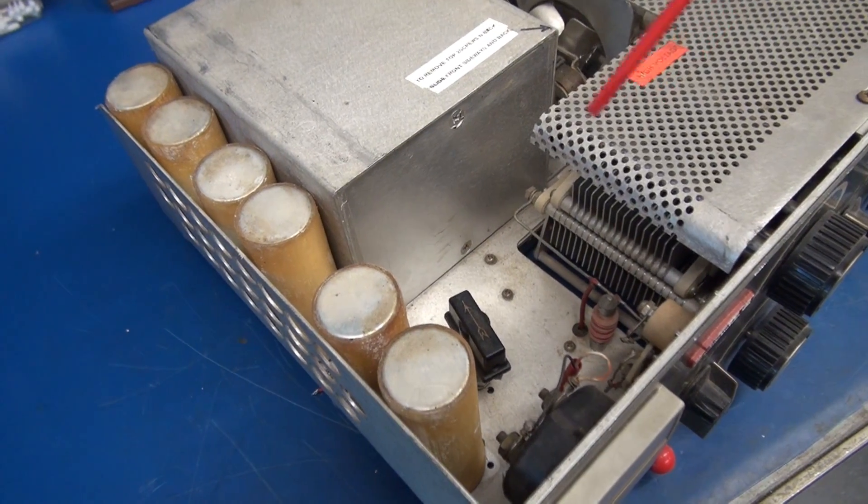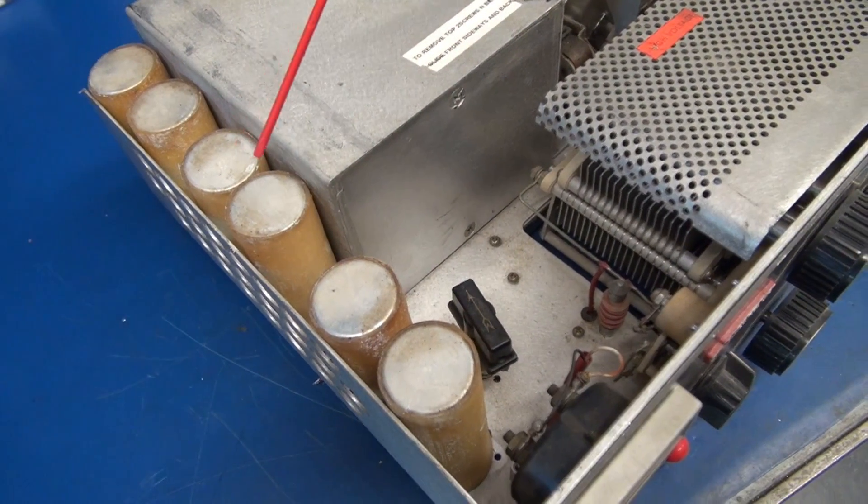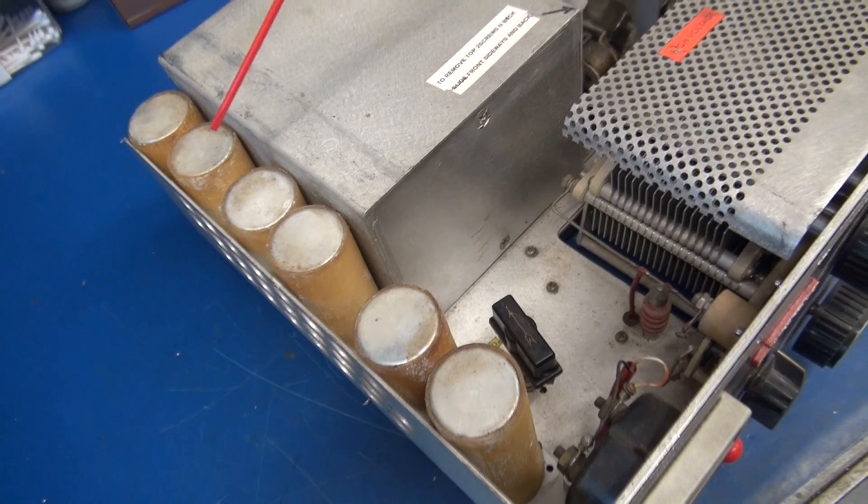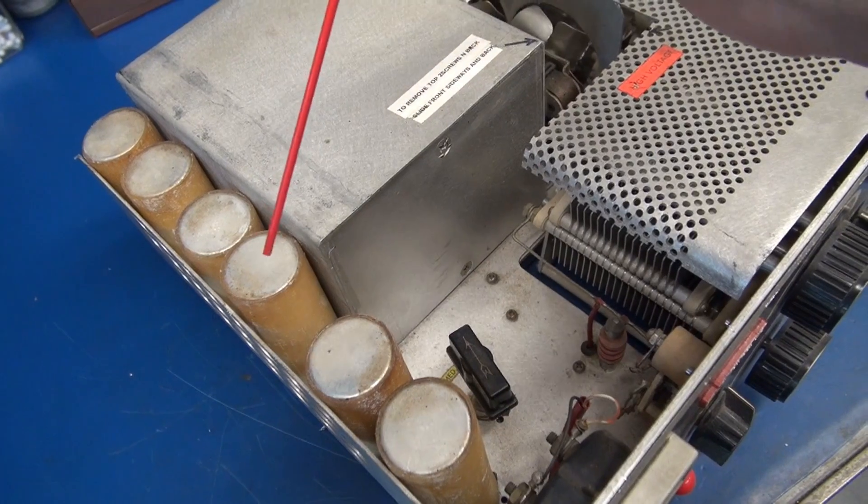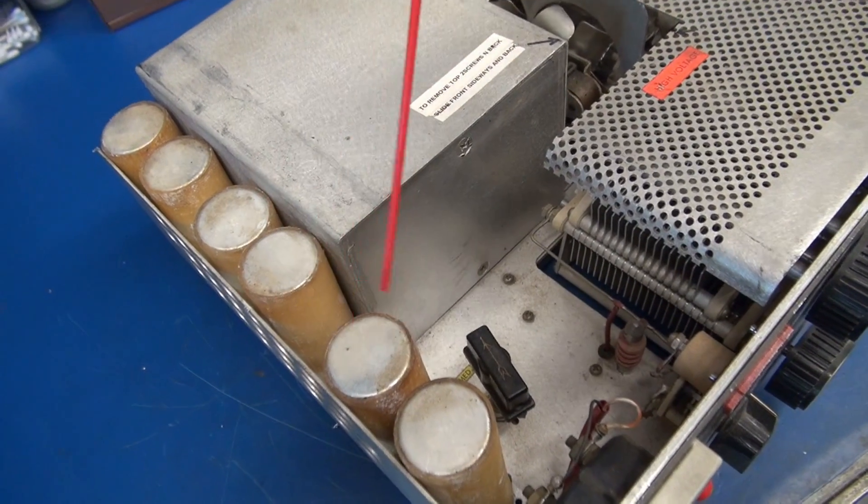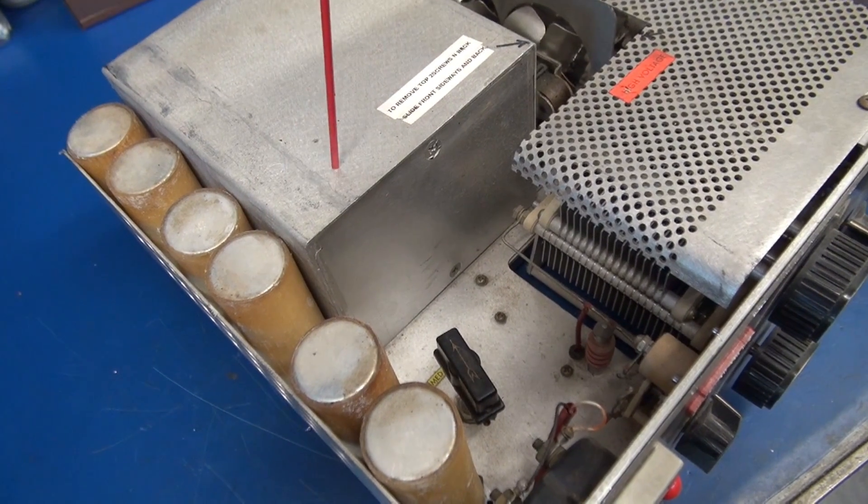So here are the original filter capacitors. There's six of them and they're tucked into a cavity down the side of the amplifier. These are all 140 microfarad at 475 volts and they have a rubber insulator around them because they're wired in series and the grounds are not connected to chassis.